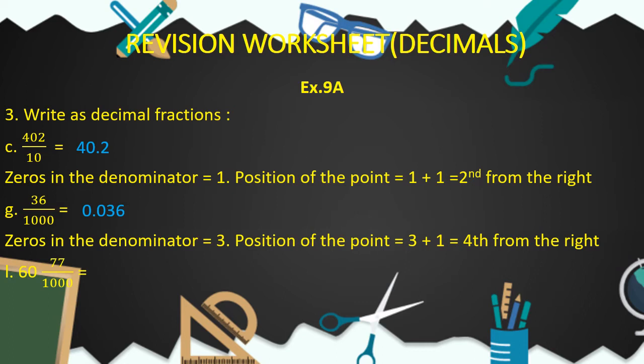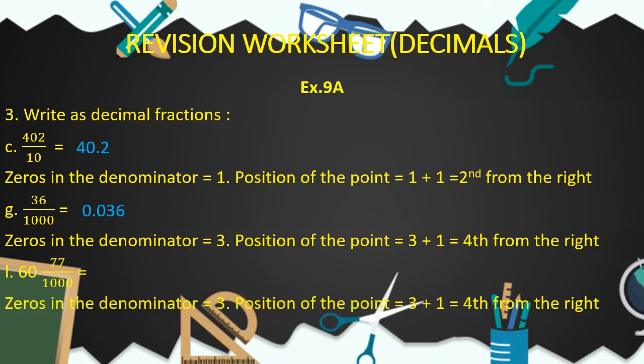Now let's come to part L of question number 3. Here we have the common fraction, which is a mixed fraction, that is 6077 upon 1,000, and we have to write this as a decimal fraction. The zeros in the denominator is equal to 3, therefore the position of the decimal point is equal to 3 plus 1, which is 4th from the right hand side. The integral part is written on the left hand side of the decimal point, so our decimal fraction is 60.077.